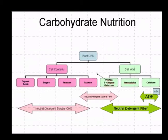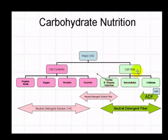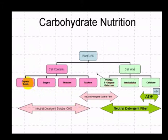Another way to look at this is from a different perspective. We have the whole plant divided into the cell contents, and then we also divide it into the cell wall or the structural components. When we look at the components in the cell contents, we actually measure this by the neutral detergent soluble fiber, which is composed of organic acids, sugars, starches, and fructans.